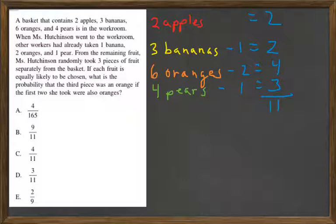So from the remaining fruit, Ms. Hutchinson randomly took three pieces of fruit separately from the basket. If each fruit is equally likely to be chosen, what is the probability that the third piece was an orange if the first two she took were also oranges?